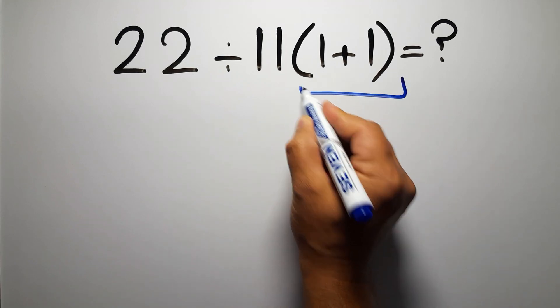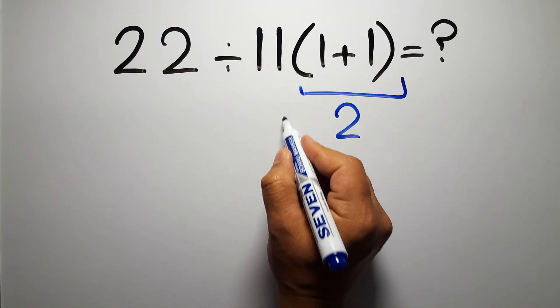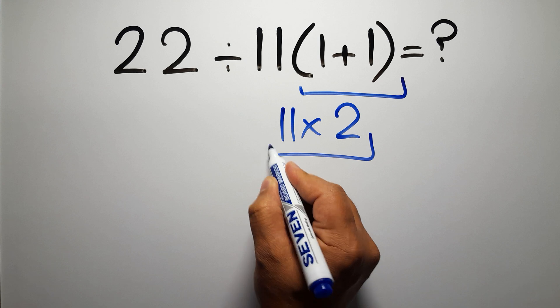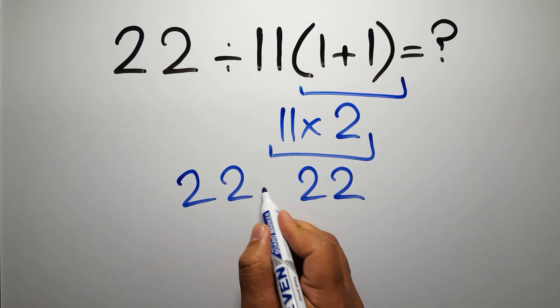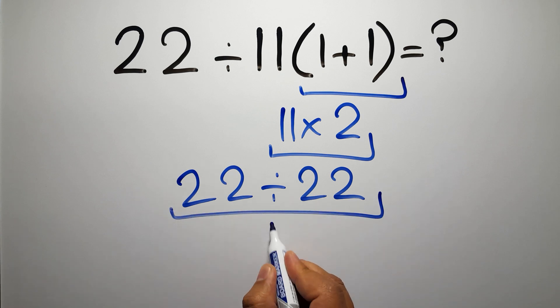1 plus 1 equals 2, and 11 times 2 gives us 22, so 22 divided by 22 equals 1, but this answer is not correct.